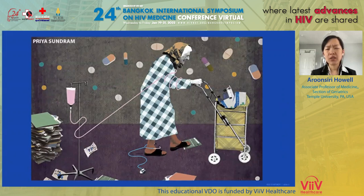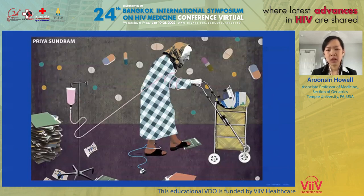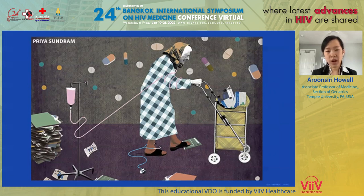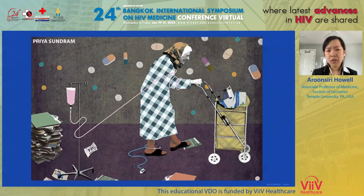Now imagine it's 4:50 PM and your last patient, Mrs. H, just showed up. She's a 69-year-old woman who's been declining at home with falls, confusion, and weight loss. You feel that the medications you've been prescribing for hypertension, diabetes, and heart disease — none of them are working because these geriatric syndromes are in the way.